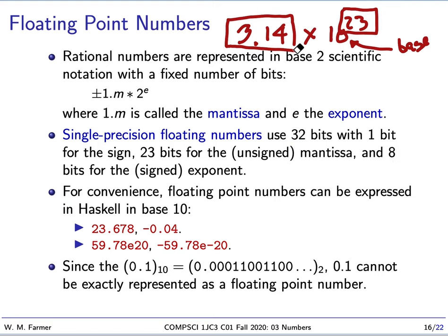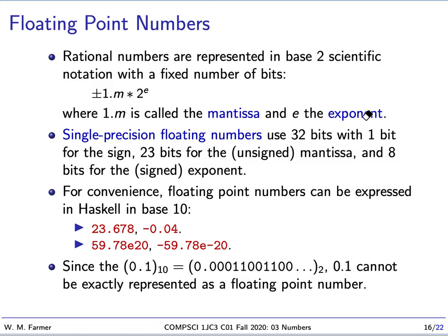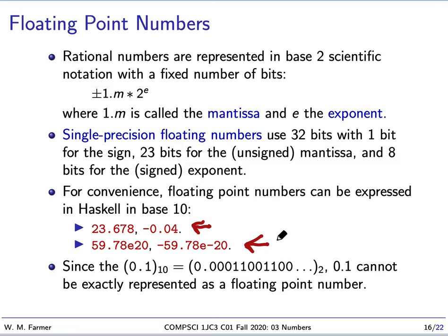We do this in base 2. If we were going to use the double format, it's exactly the same but we use 64 bits. It's very convenient to express floating point numbers in base 10. In Haskell, we can write them as decimal numbers or as scientific notation in base 10. Technically this isn't scientific notation because the point would come right after the first digit, but we can represent them both ways.